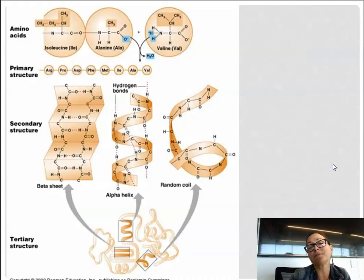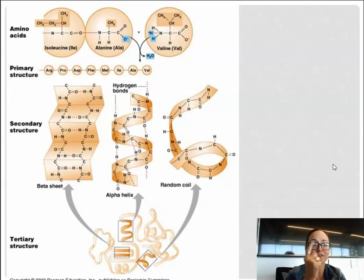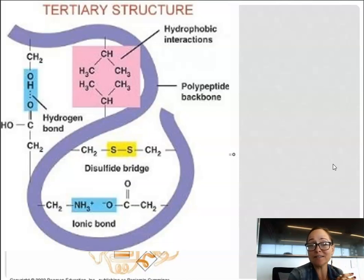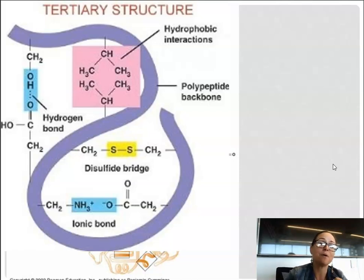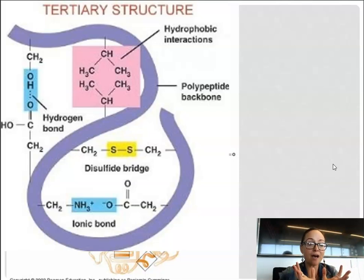Enzymes are proteins, and when building a protein there are four structural levels. The primary structure is the order of amino acids, determined by the DNA. The secondary structure is based on hydrogen bonding between amino acids, forming either the alpha helix or the beta pleated sheet. The tertiary structure is based on interactions between R groups: nonpolar hydrophobic interactions, ionic bonds between positive and negative R groups, disulfide bridges — a covalent bond between cysteine sulfur groups — and hydrogen bonds between R groups. Protein folding depends on how those R groups interact with each other.